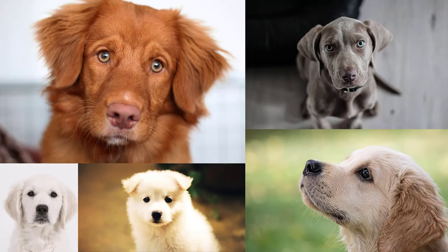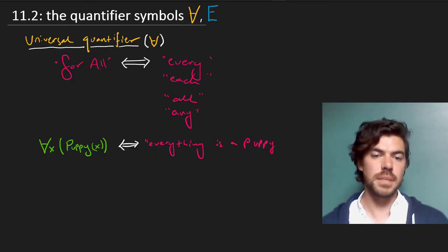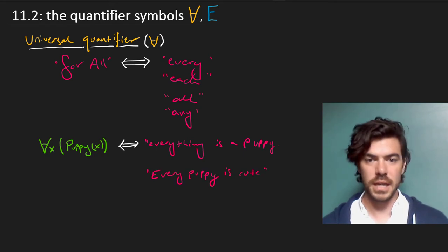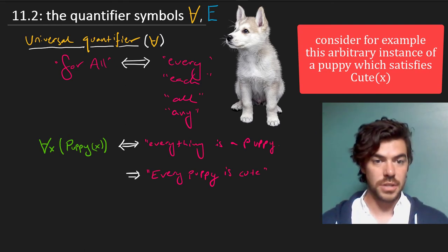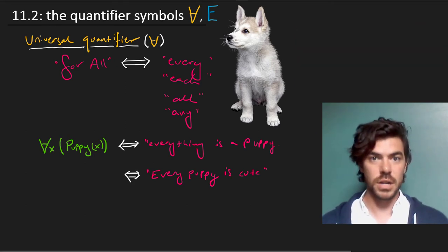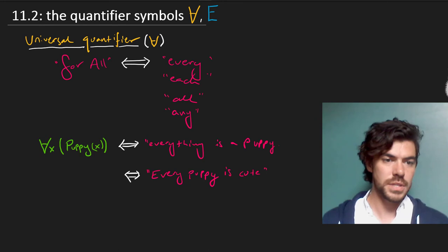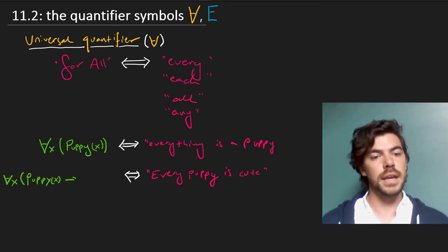But suppose we wanted to say something a little bit more measured, like every puppy is cute, which, depending on your opinion, might come out as an analytical truth. This is equivalent with what we actually read as a conditional phrase, and we're going to look at this in greater detail later on. We would say, for all x, if x is a puppy, then x is cute.